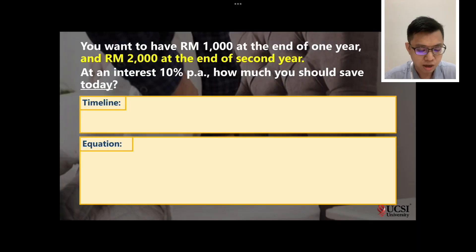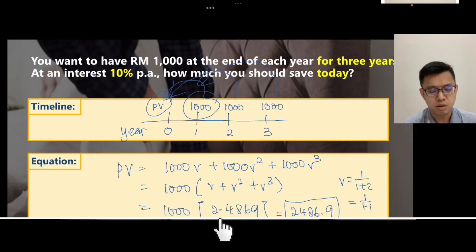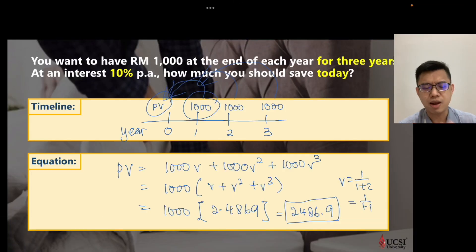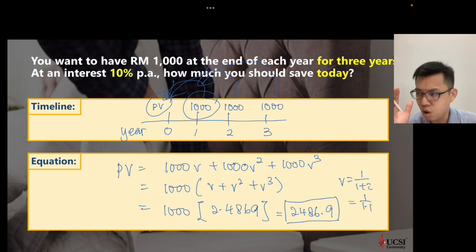So, let's draw a timeline for this one. Okay, let's say you do that. How about 50 payments? Are you going to discount all of them one by one?